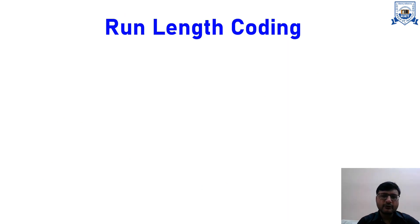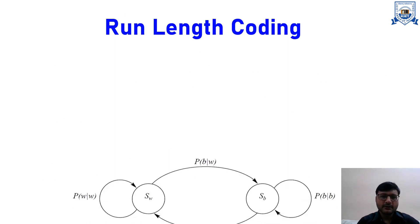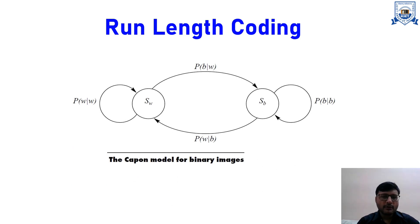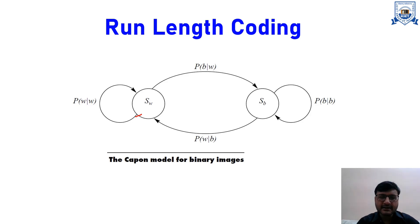One application of facsimile encoding is run-length coding. This is related to the two-state Markov model, which we have already discussed during the types of models in Unit 1. It is a two-state model for binary images, where a pixel may be either a black pixel or a white pixel. We have two states: SW, corresponding to the pixel being a white pixel, and SB, corresponding to the pixel being a black pixel.